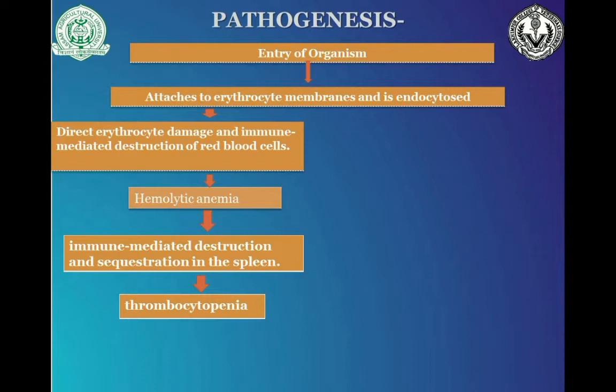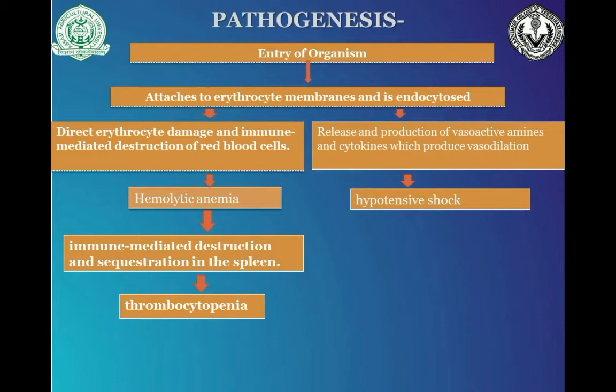As a result of splenomegaly, the spleen holds on to more thrombocytes, making them unavailable in the circulation and thus causing thrombocytopenia. These organisms also release vasoactive amines and cytokines, which produce vasodilation — one reason for causing hypotensive shock in the host.